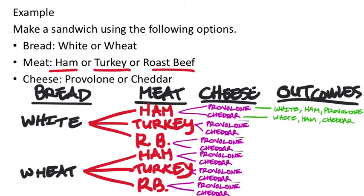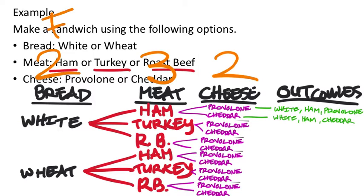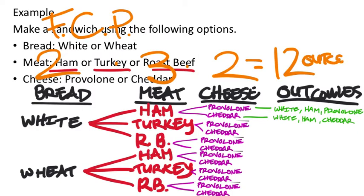How many total outcomes are there? Counting them: 2, 4, 6, 8, 10, 12 — twelve. How do we get twelve using the Fundamental Counting Principle? How many breads do we have? Two. How many meats? Three. How many cheeses? Two. The FCP says just multiply those: 2 times 3 times 2 equals twelve outcomes. Twelve possible outcomes, which is the denominator if you're looking at theoretical probability.